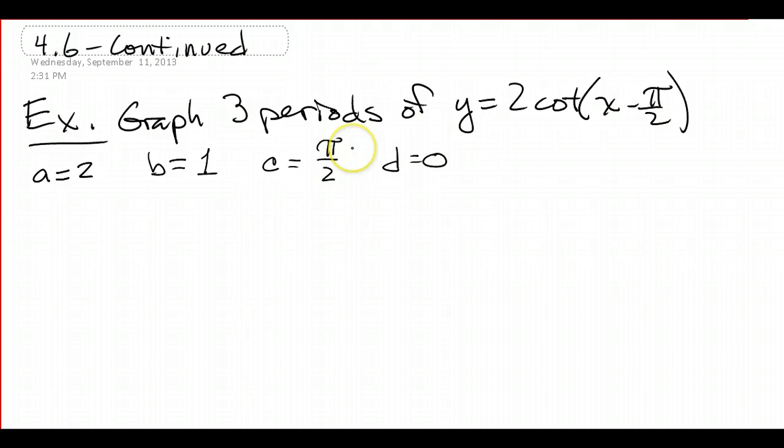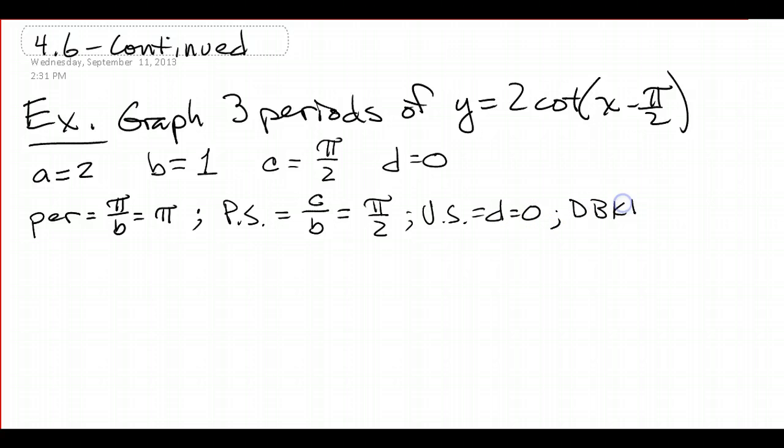And once we have those, again we don't need to find the amplitude, but we're going to find the period. So period is pi over b, which is just going to be pi. Phase shift is c over b, so that's pi over 2 divided by 1, which is pi over 2. So this is shifted to the right, pi over 2. Vertical shift is based on d, so that's just 0. And then our distance between key points, which again we're going to use for our graph, is our period divided by 4. So that's just going to be pi over 4. So I'm going to mark my graph every pi over 4.